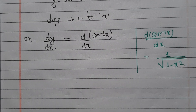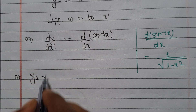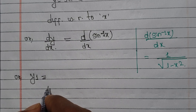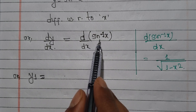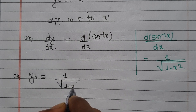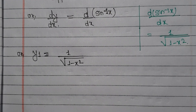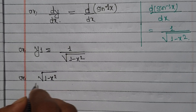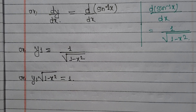So what do we get? y₁ equals dy/dx. We write y₁ — concept should be clear, no confusion. The derivative of sine inverse x is 1 by root over 1 minus x squared. So up to here we have arrived: 1 minus x squared, y₁ equals 1.